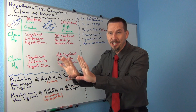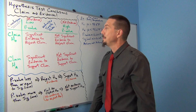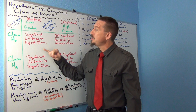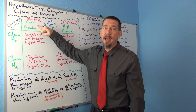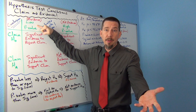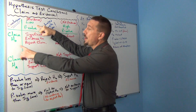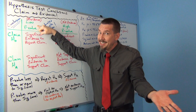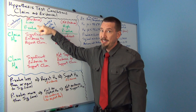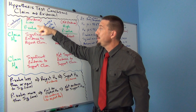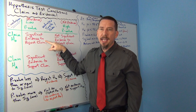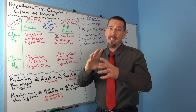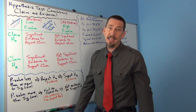Assuming we got really good data that met all the assumptions — if we had a low p-value, we would be rejecting the null hypothesis. If the null hypothesis was the claim, then we would be rejecting the claim. So the conclusion would be: there is significant evidence to reject the claim. In other words, I think the claim is wrong and I have some evidence to back that up.